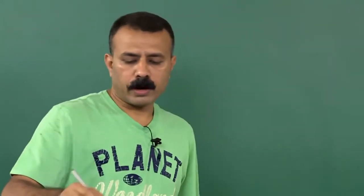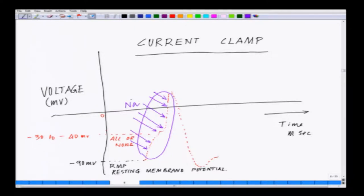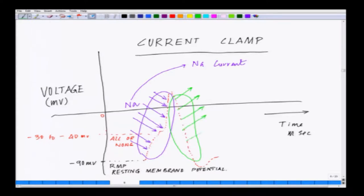The challenge is: how do we know, at the part of the curve where there is influx of sodium, how I can measure the influx of sodium — in other words, the sodium current? And how could I measure the other current, which is the potassium current going out of the cell?